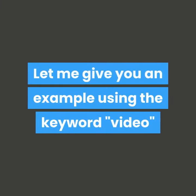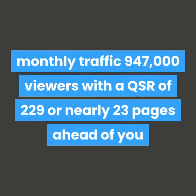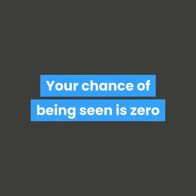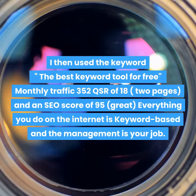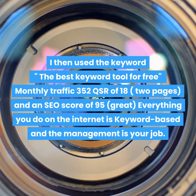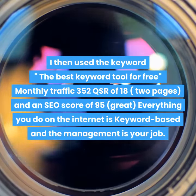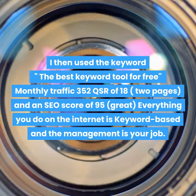Let me give you an example. Using the keyword 'video,' monthly traffic is 947,000 viewers with a QSR of 229, or nearly 23 pages ahead of you — your chance of being seen is zero. I then used the keyword 'the best keyword tool for free' and found a monthly traffic score of 352, a quoted search result of just 18 or 2 pages, and an SEO score of 95, which is great.